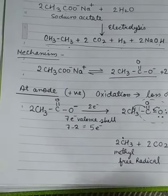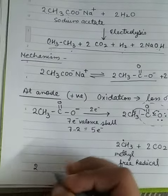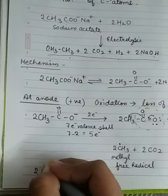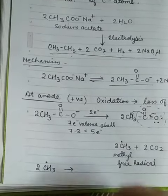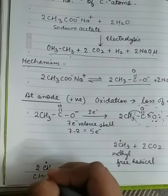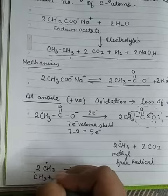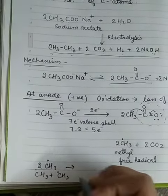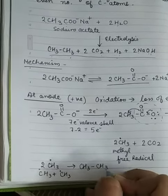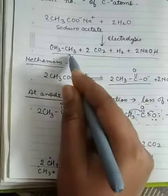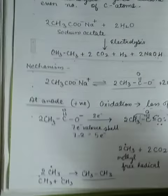Now here two methyl free radicals will combine with each other. CH3 radical plus CH3 free radical will give you CH3-CH3. So this is the product we have obtained at anode.